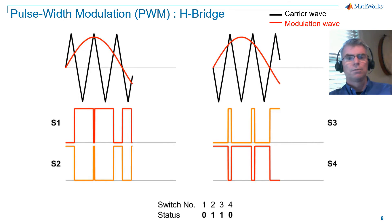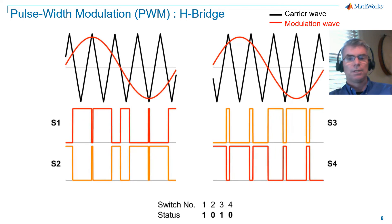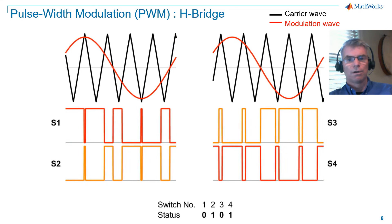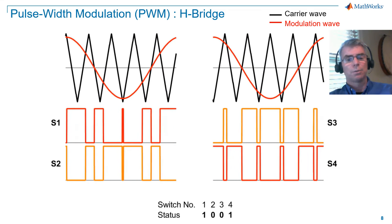For arm 2, which has switches S3 and S4, the PWM signal for S3 is generated by using a carrier wave that is flipped relative to the carrier wave for arm 1. The S4 PWM signal is the logical knot of the S3 PWM signal. We now have the four gate signals we need.